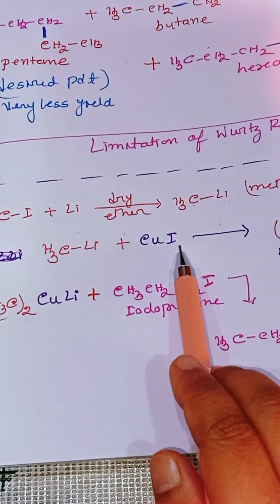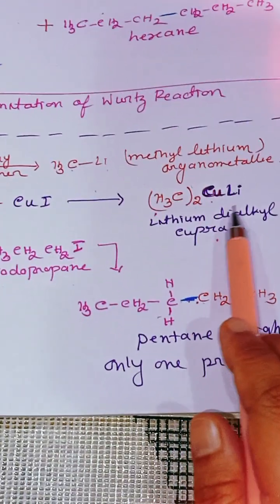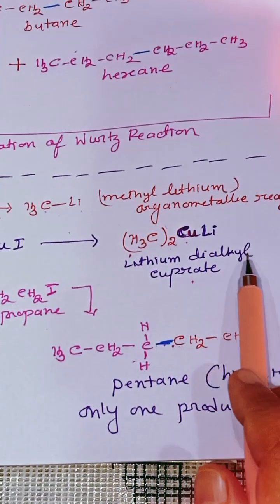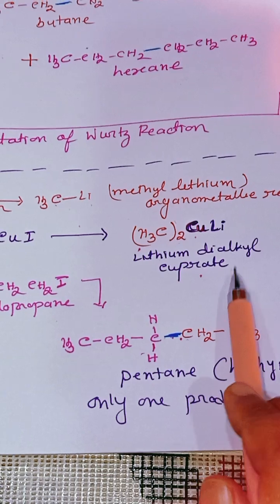This methyl lithium reacts with cupric iodide and we get another organometallic reagent which is called lithium dialkyl cuprate.